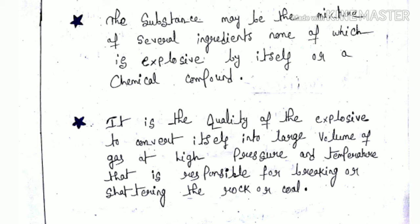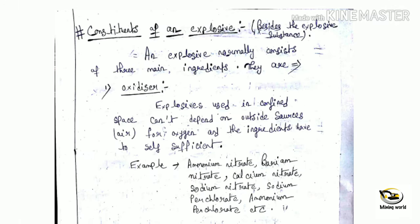The conversion of explosives into a large volume of gases at high temperature and pressure is responsible for breaking or shattering the harder rocks and coal. The next topic is constituents of an explosive. The main three ingredients of an explosive are oxidizer, fuel, and sensitizer.